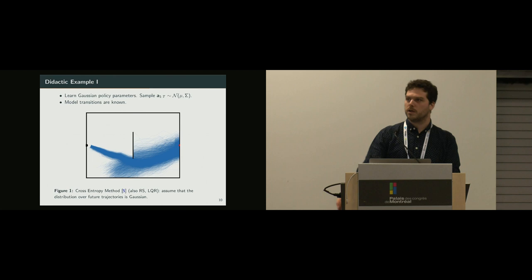Here, the cross-entropy method assumes that the distribution over best trajectories is Gaussian, and then unimodal. So in this case, you would miss completely the path that is above the wall.